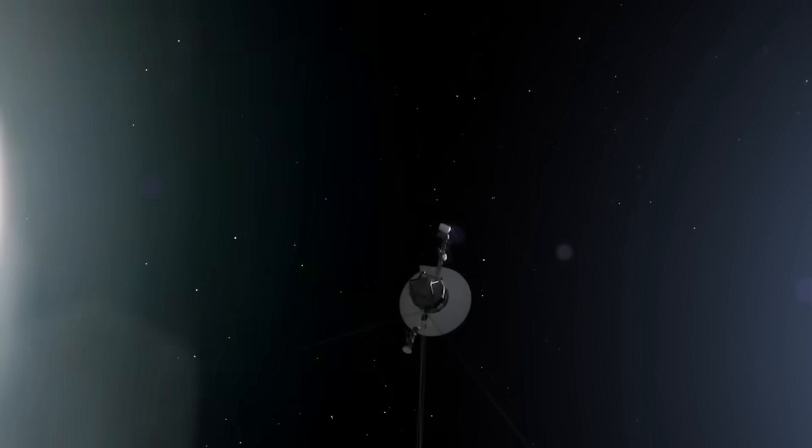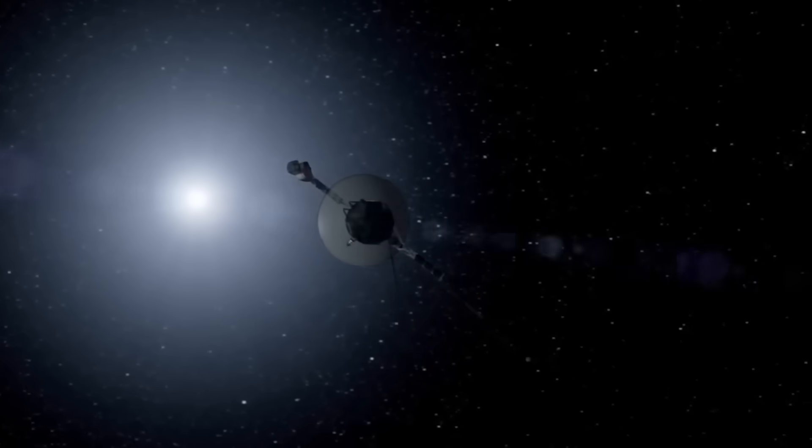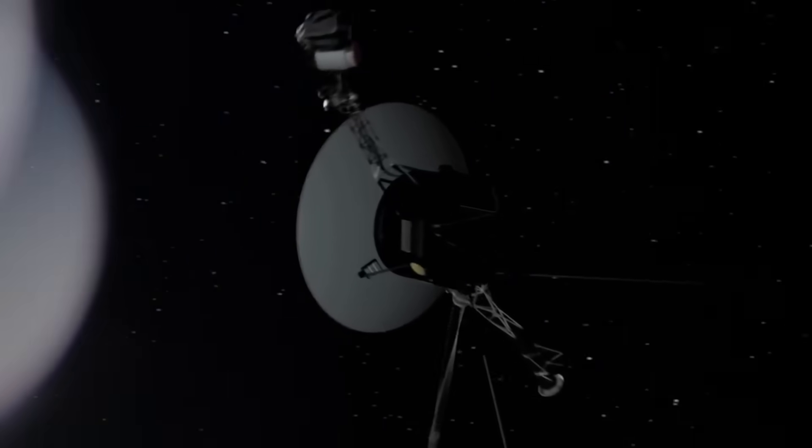The edge of the solar system isn't a place. It's a threshold, an invisible curtain drawn across space, where the influence of our sun begins to fade and the forces of interstellar space take over.